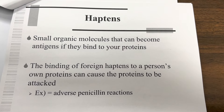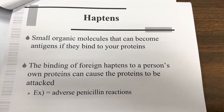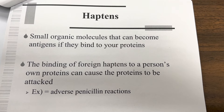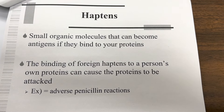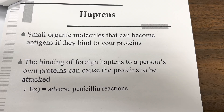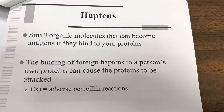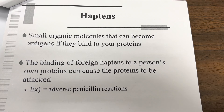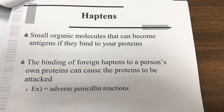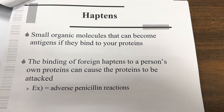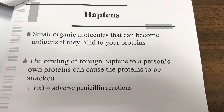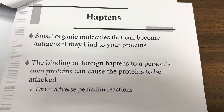Haptens are small organic molecules that can become antigens if they bind to your proteins. The binding of foreign haptens to a person's own proteins can cause those proteins to be attacked. Example: adverse penicillin reactions.